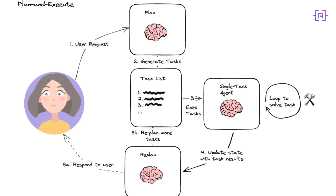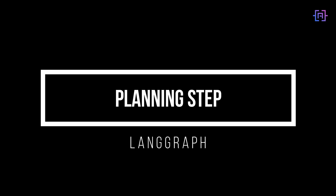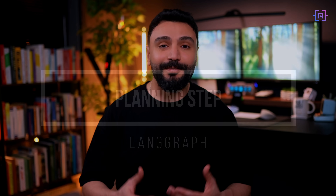We can use a smaller model for execution while reserving the larger model for the planning stage. Through re-planning, our agent can adjust for new information or changes in the environment. Now let's dive into the core components of this architecture: the planning and re-planning stages.